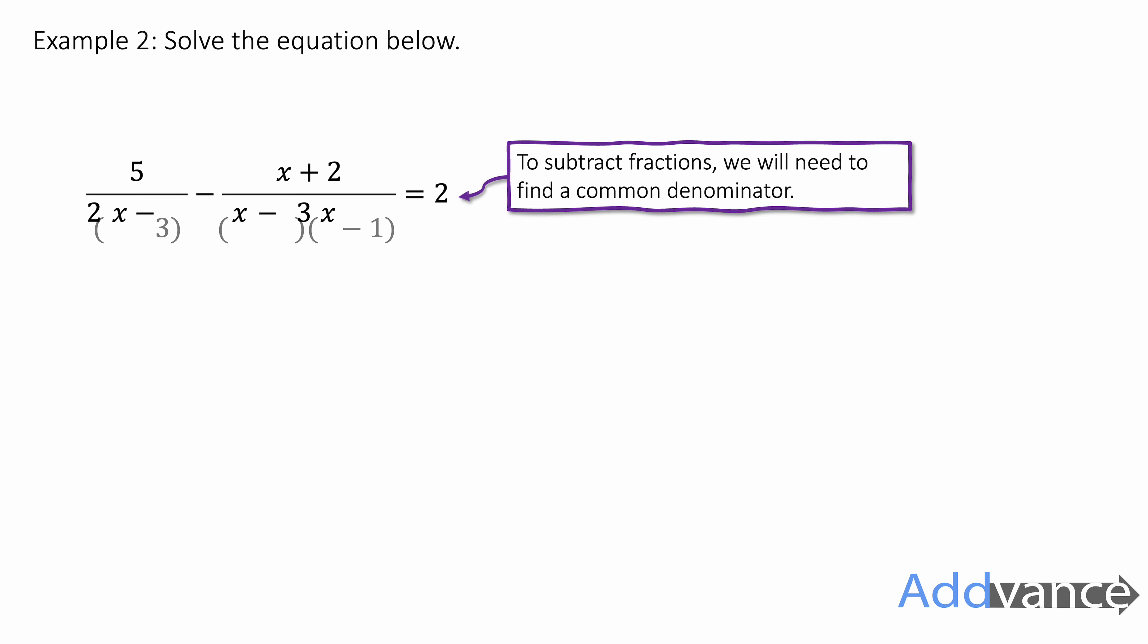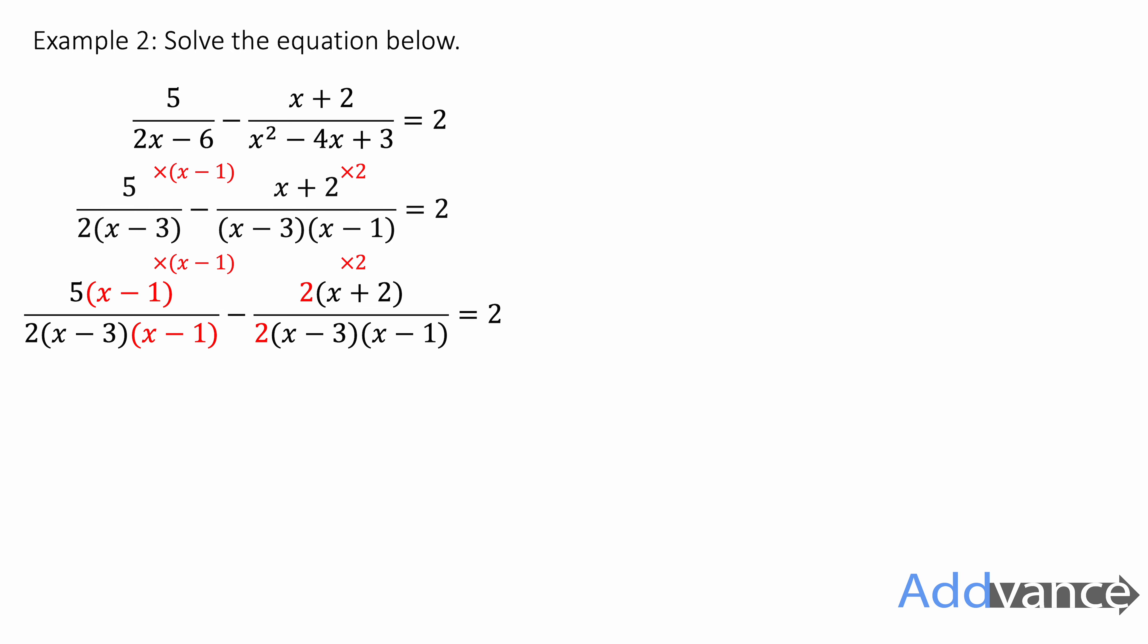So we'll start by factorising the top and the bottom of these fractions. Always a good idea when you've got algebraic fractions, factorise the top and the bottom. And we need to make common denominators. So to make the first one a common denominator, we'll multiply everything by x minus 1. And for the second one, we'll multiply everything by 2. And that gives me a common denominator of 2(x minus 3)(x minus 1). We can now look at subtracting the numerator of the fractions. And we can combine it into one fraction where we've subtracted the numerator. We expand the top, being very careful about our negative numbers, and then we simplify. And we get 3x minus 9.